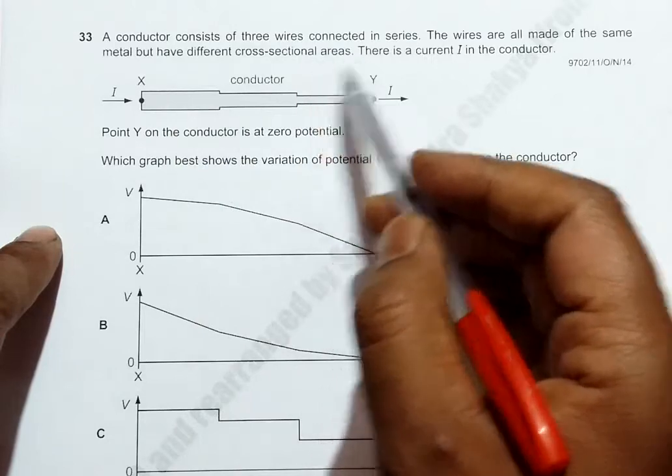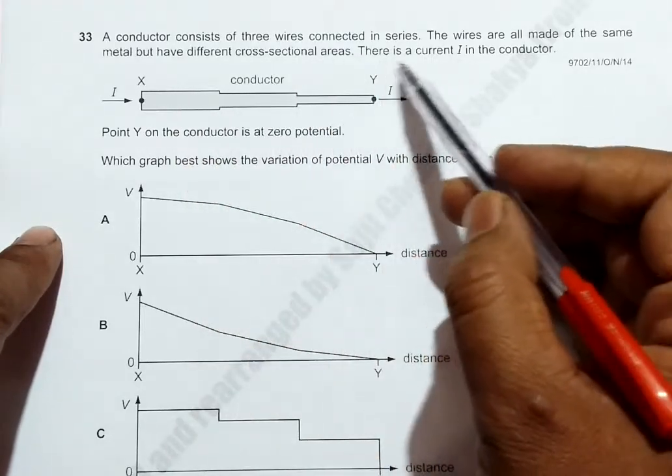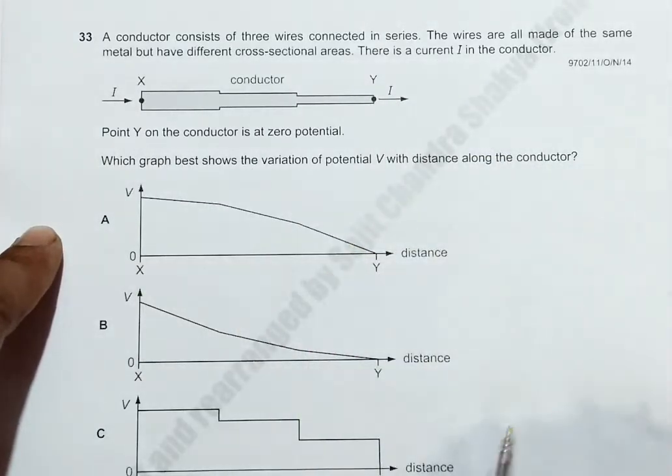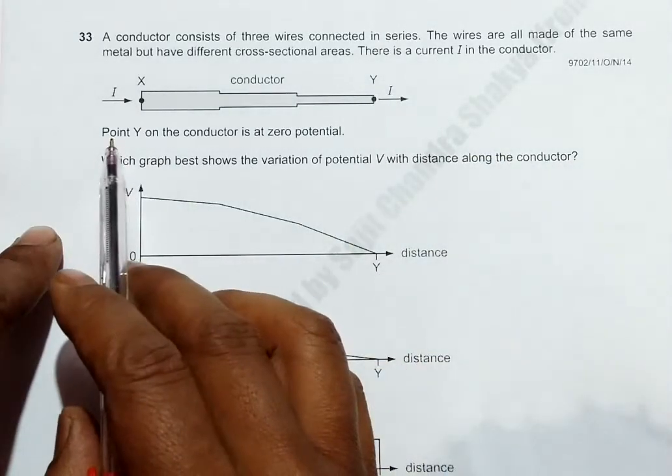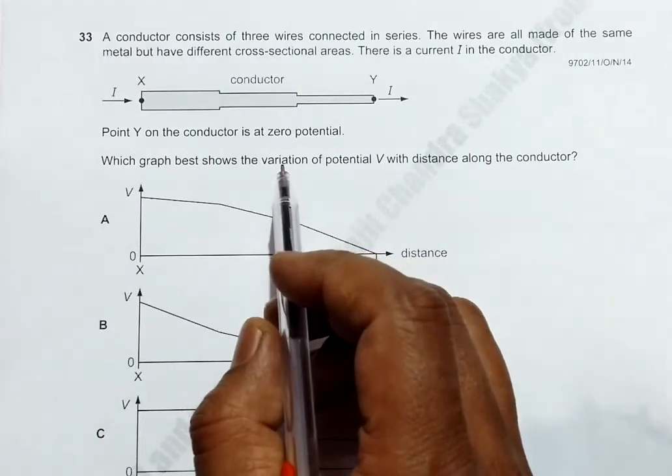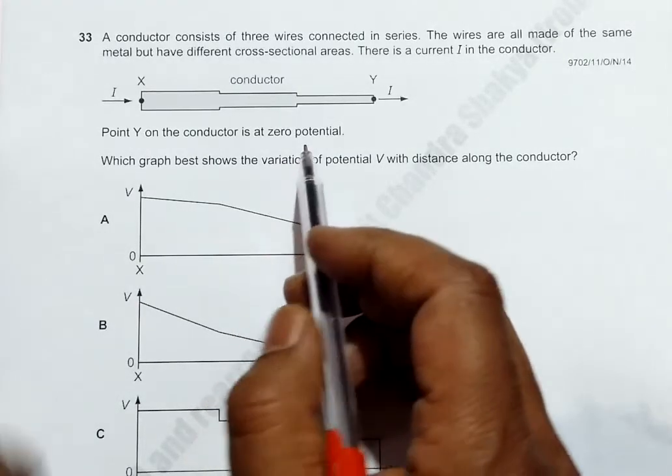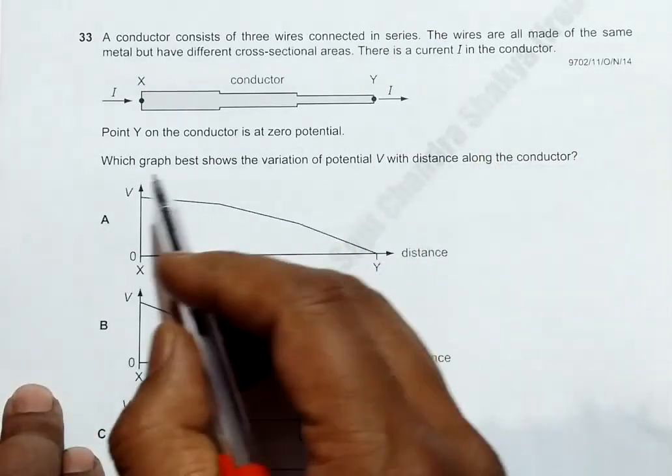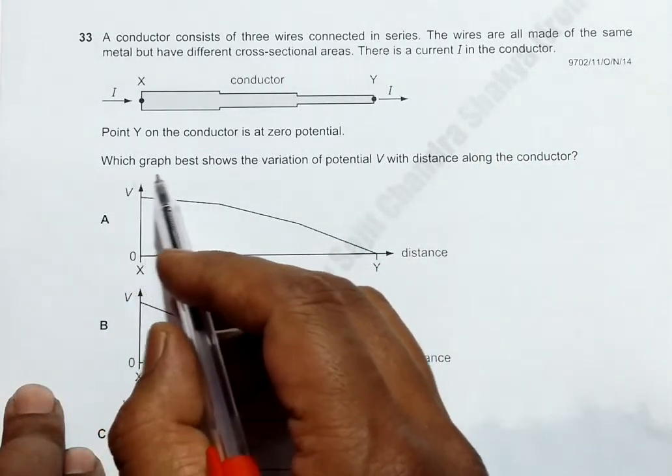As you can see from the diagram, there is a current I in the conductor, coming in here and out here. Point Y on the conductor is at zero potential, that means it connects to the negative terminal of the battery.